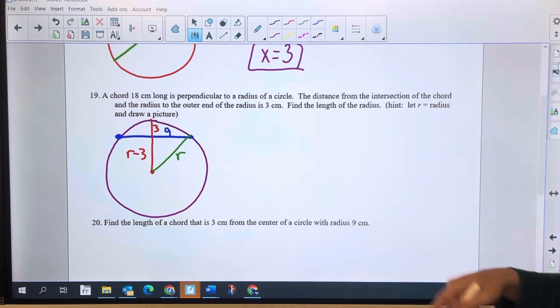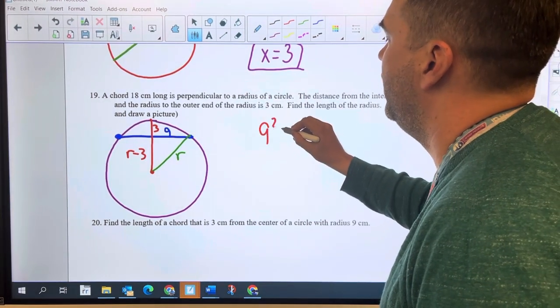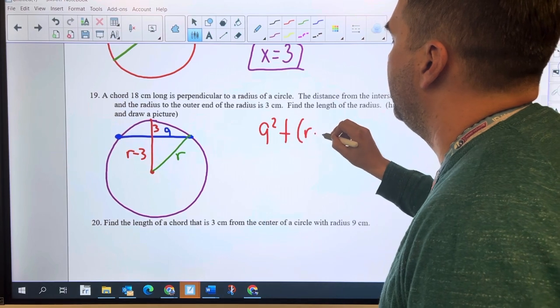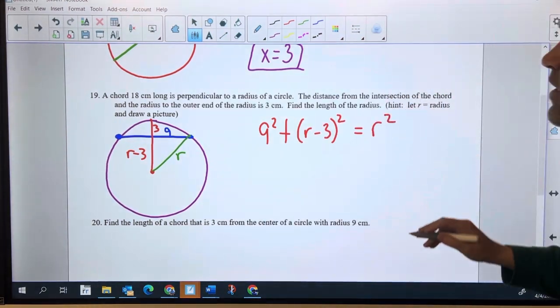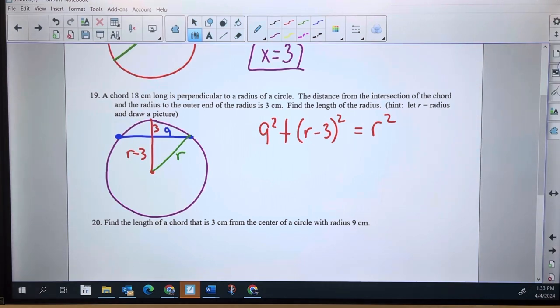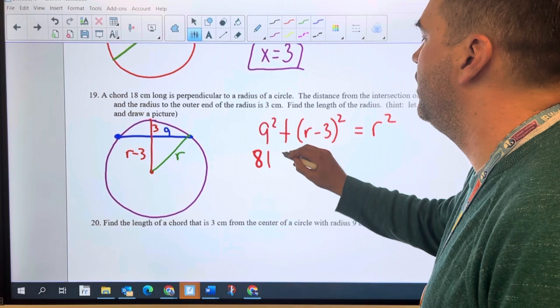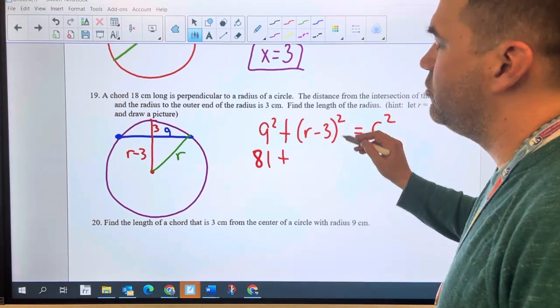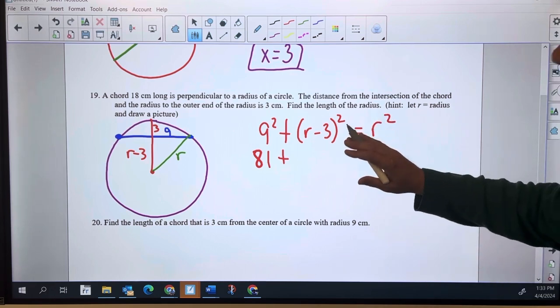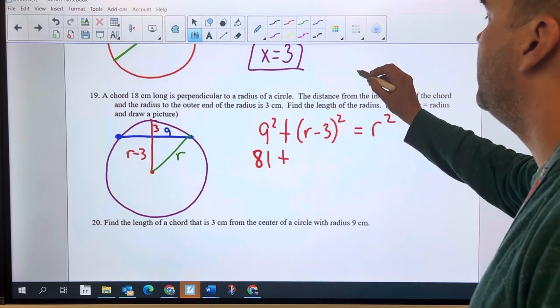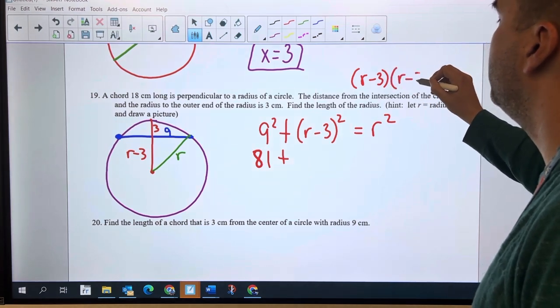Now let's set it up. One unknown R, and I can use Pythagorean theorem. Nine squared plus R minus three squared equals R squared. It's going to be some really nice algebra that happens here. Nine squared is 81. R minus three squared, it's not R squared plus nine or R squared minus nine. No, you need to square this whole thing.